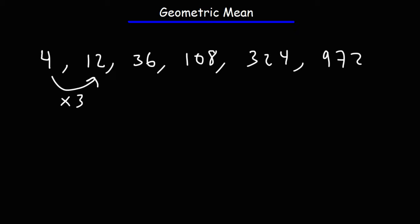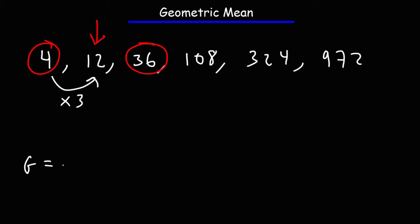Let's say we want to calculate the geometric mean between 4 and 36. The geometric mean of two numbers is simply the middle number in that geometric sequence, so the geometric mean of 4 and 36 is 12. To calculate the geometric mean between two numbers, it's simply the square root of the first number times the second number. So we take the square root of 4 times 36.